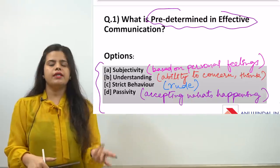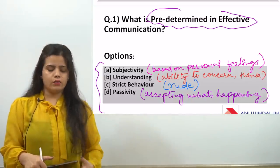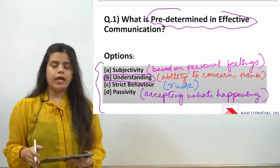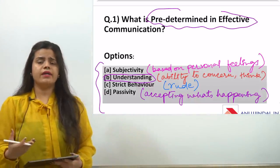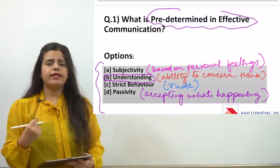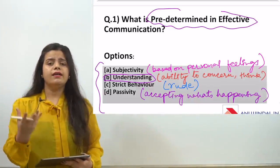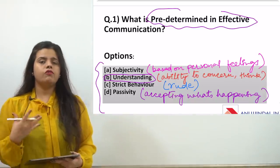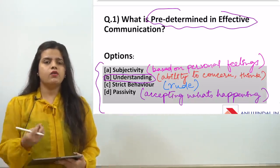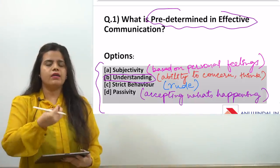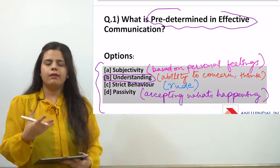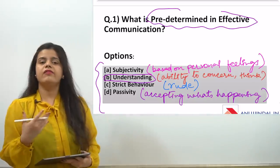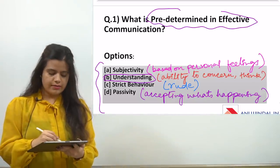For effective communication, there is a need to be understanding. Subjectivity, strict behavior, and passivity are not important as pre-determined elements of effective communication. The correct answer is understanding, because without a feeling of understanding something, we cannot learn, and we cannot make our communication effective.